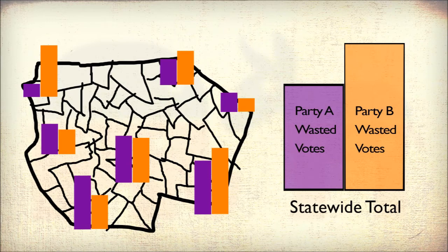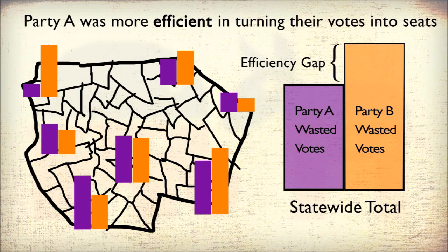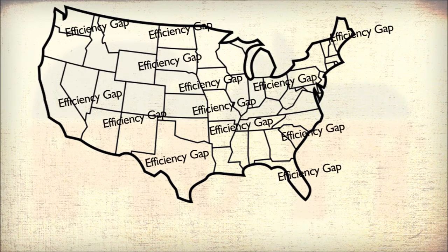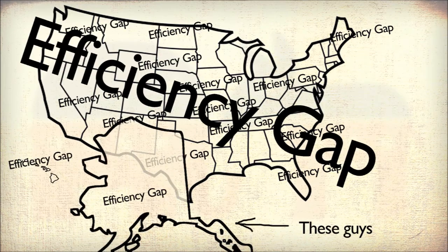In a fair election, each political party should have the same number of wasted votes. If there is a difference, that difference is the efficiency gap, as one party has been more efficient than the other in minimizing their wasted votes. Through this wasted votes method, the efficiency gap has struck a chord with the public and with the courts, and over the years it has been used to measure legislative elections in every state of the union and the nation as a whole.